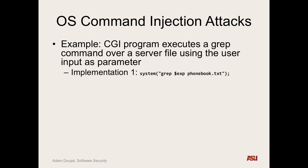We can use a semicolon. Instead of just the expression, if I can control that parameter, I can do: semicolon, a new command, then another semicolon — and it will execute that command in addition to whatever grep was doing. Then I can download a remote shell PHP application, try to add myself to the SSH authorized keys file, or change the user's password. You can also use backticks in addition to semicolons.